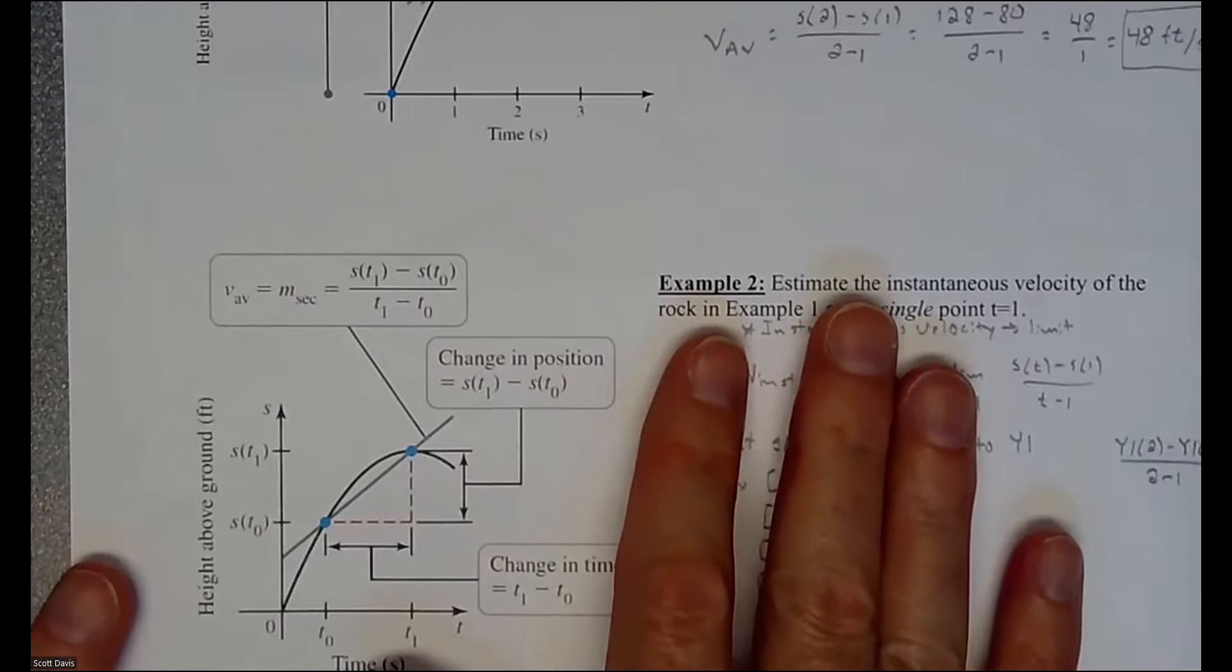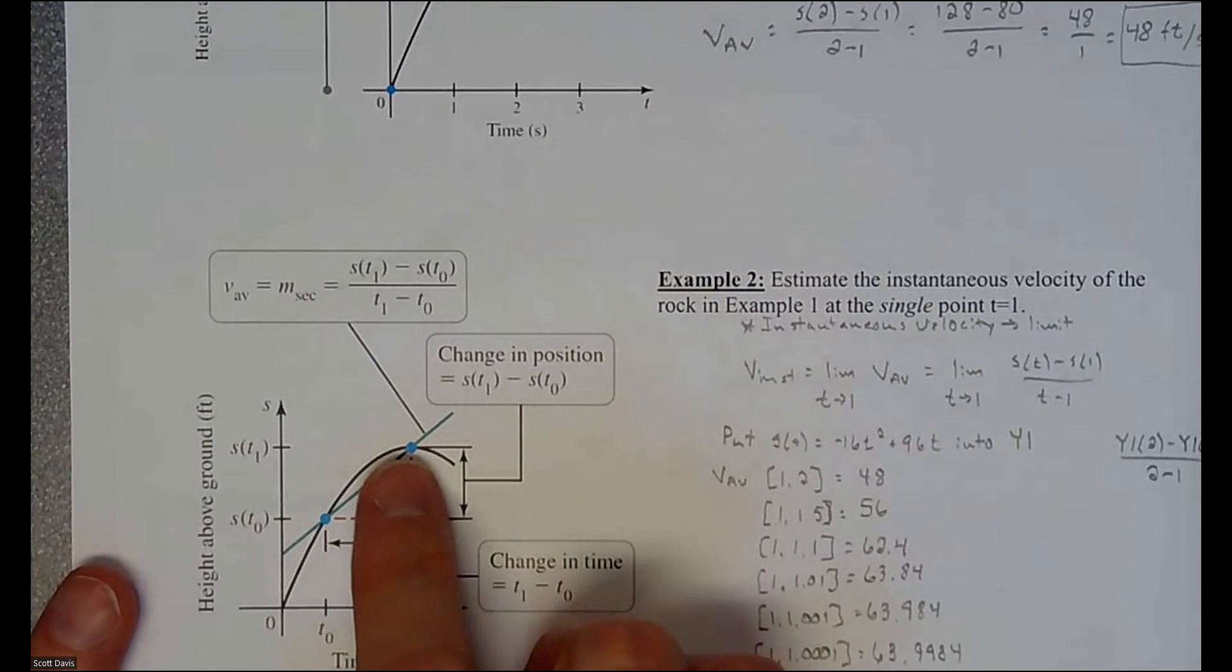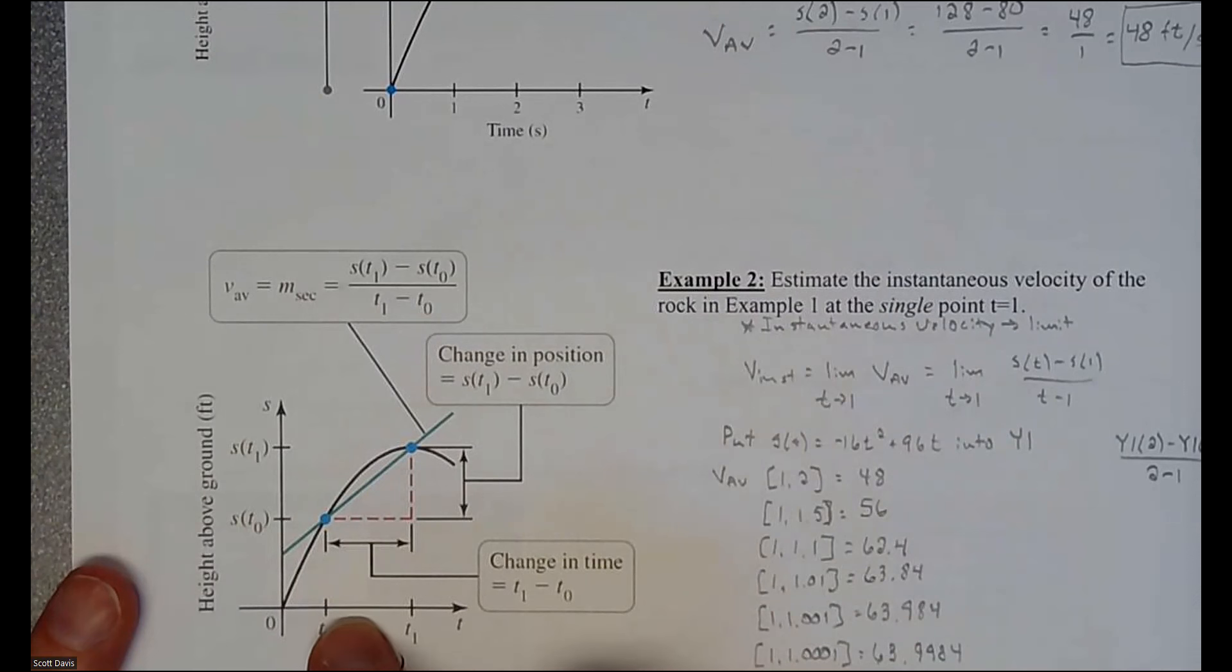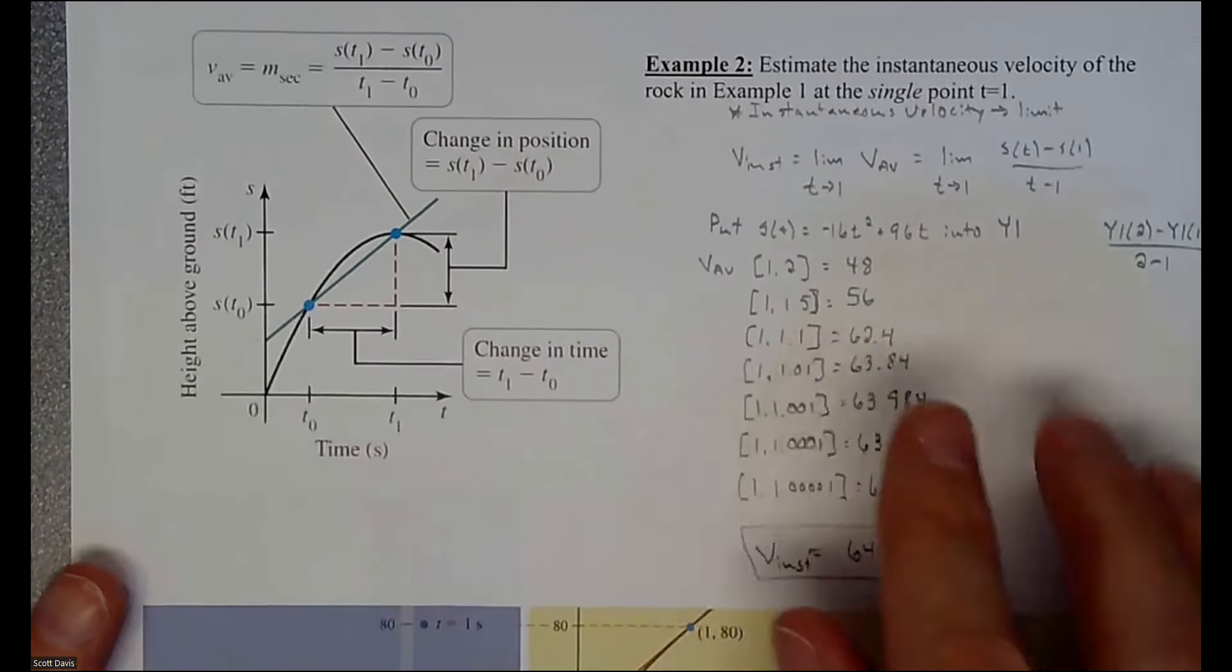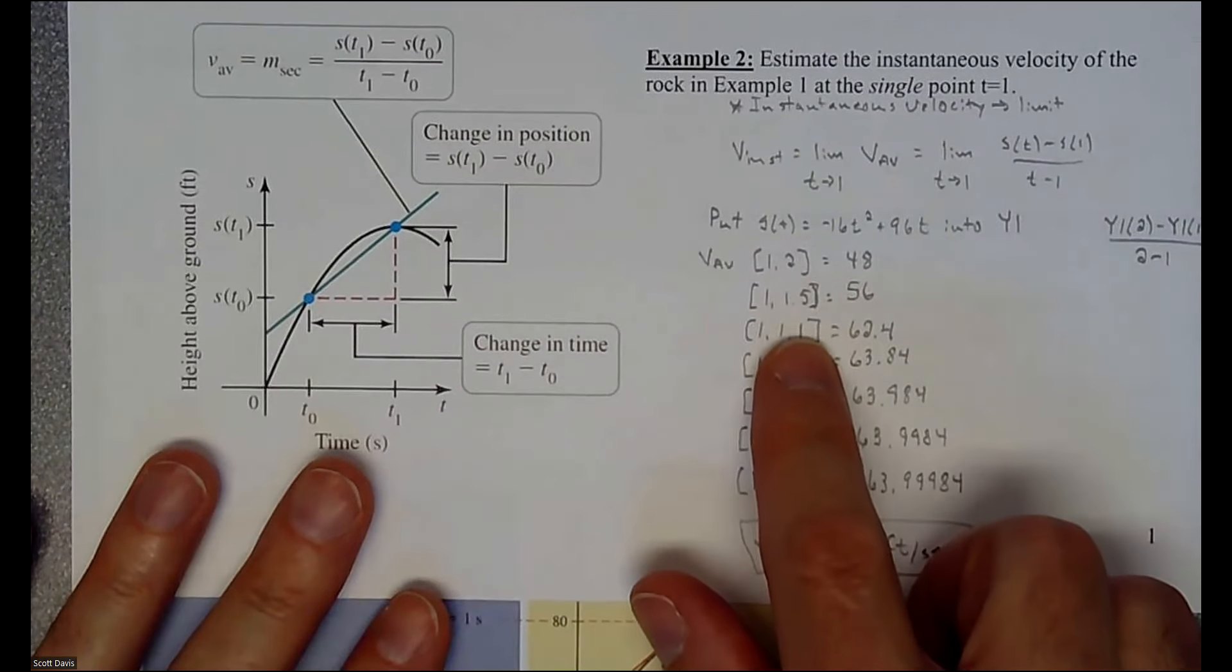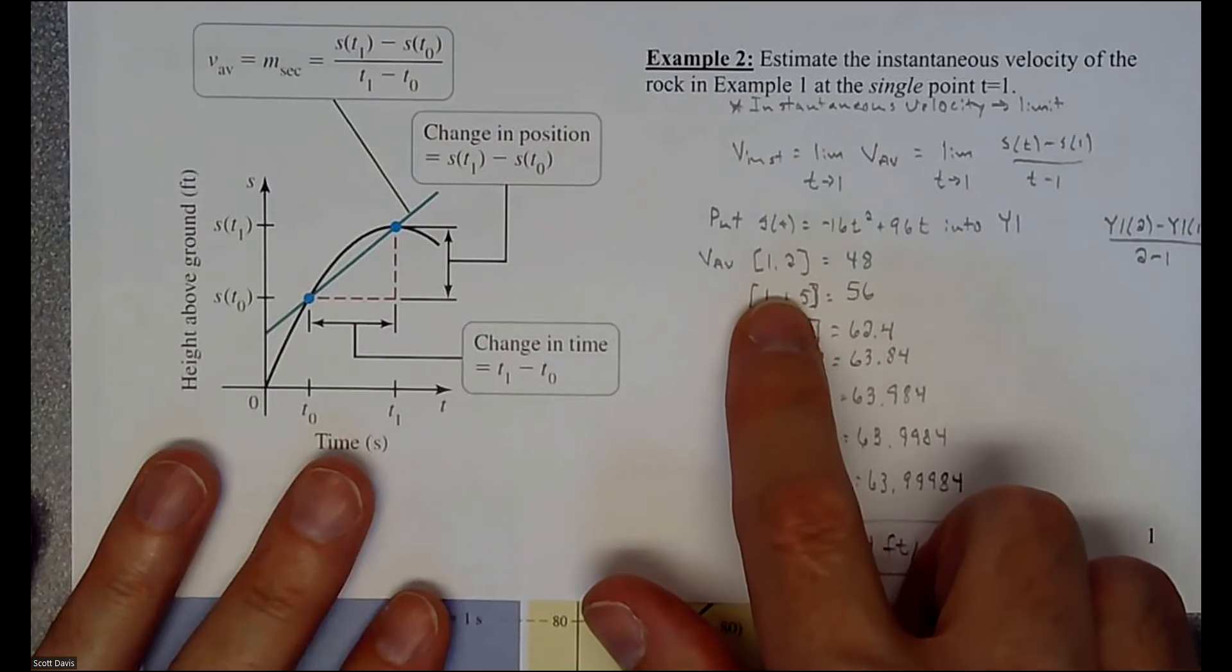And usually you kind of lock one, and then you kind of pull the other one down, and then that is us right here taking this value, and we're going to get closer and closer to one.